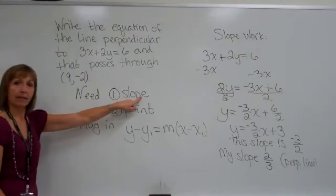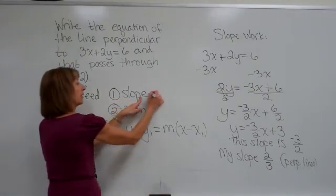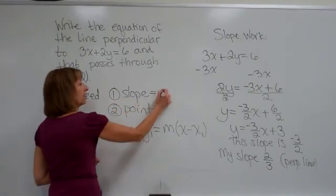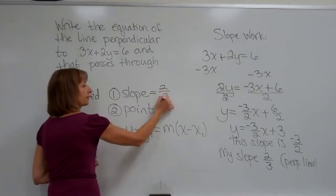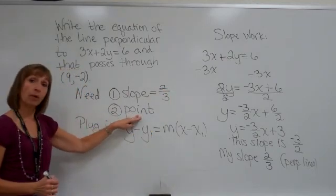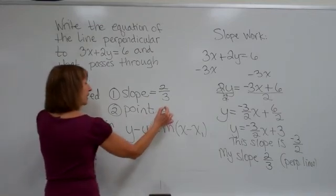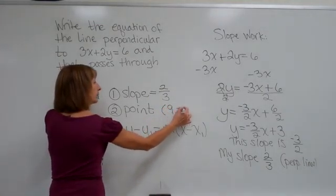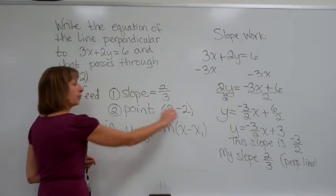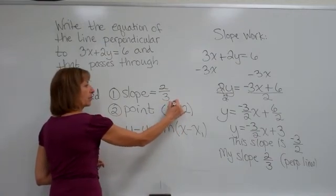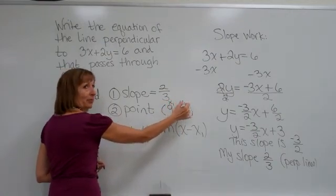Over where I have my slope, I'm going to be replacing that with knowing that the slope is 2 thirds. Now a point that my line goes through. My line goes through 9 comma negative 2. Remember your point is your specific x and y coordinates, so that's an x sub 1, y sub 1.